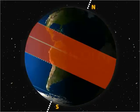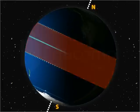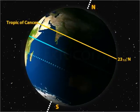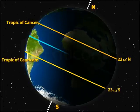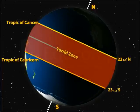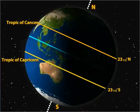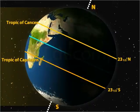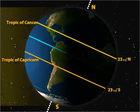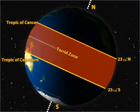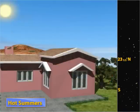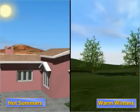The region lying between the Tropic of Cancer, 23.5 degrees north, and the Tropic of Capricorn, 23.5 degrees south, is known as the torrid zone. Here, the rays of the sun fall almost vertically through the major part of the year. Hence, this region forms the hottest part of the Earth. Here, summers are extremely hot and even winters are warm.